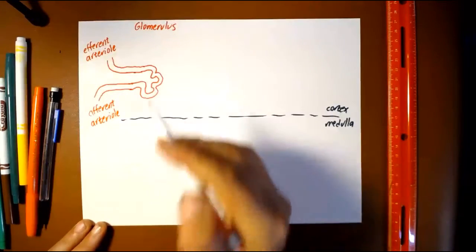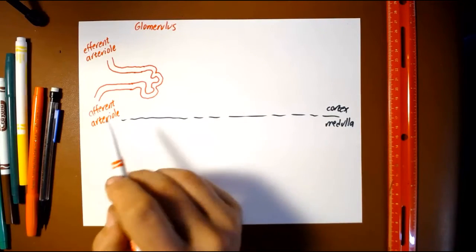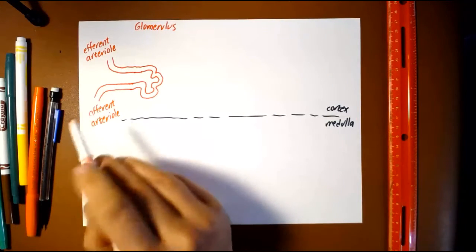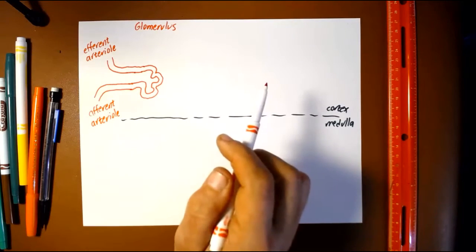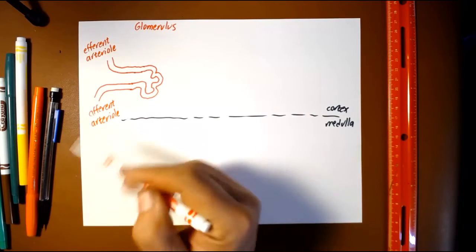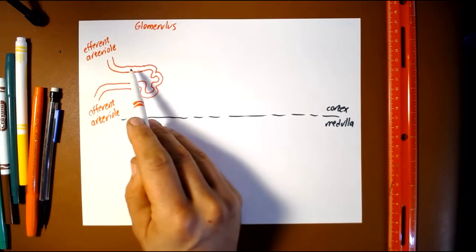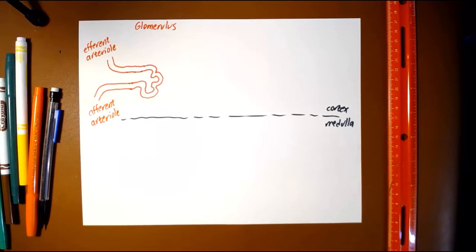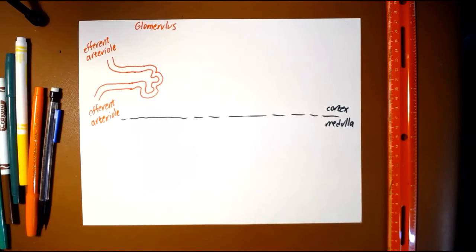Now, notice this is a little bit different. We normally talk about blood supply being arteries, arterioles, capillaries, venules, veins. But here we have one of these unusual ones where we have an artery to an arteriole to a capillary, and then to an arteriole again — and that's then going to lead to another set of capillaries. Kind of interesting.